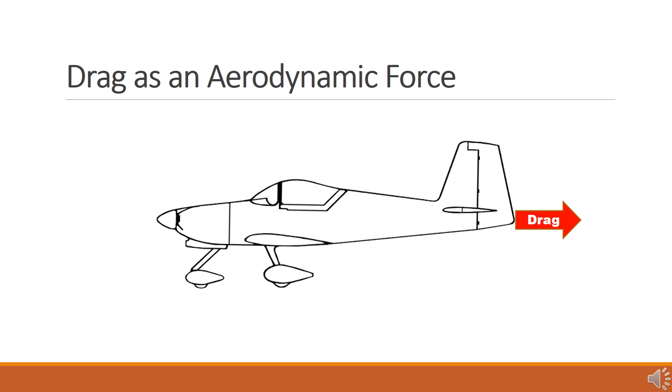The drag generated by an aircraft passing through the air acts to slow an aircraft down. For an aircraft to accelerate forward, the thrust generated by the engine must exceed the force of drag. In the other lessons in this section, we will be discussing the other three forces affecting flight: weight, lift, and thrust.